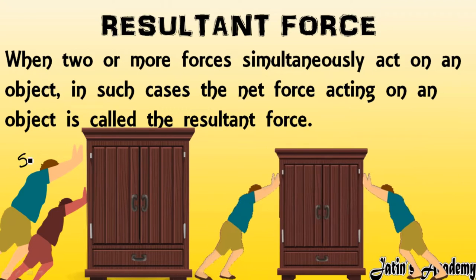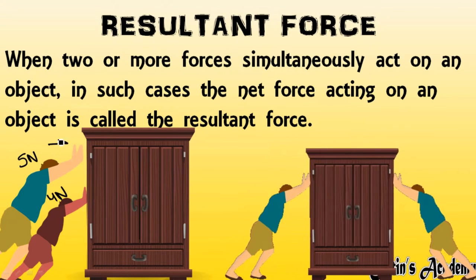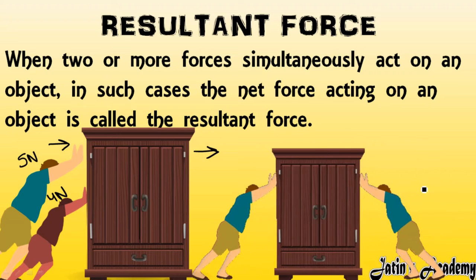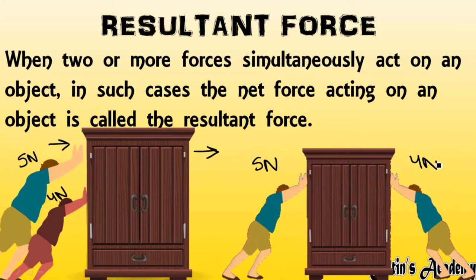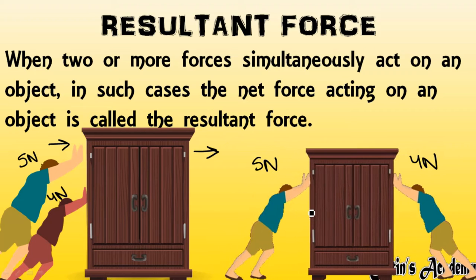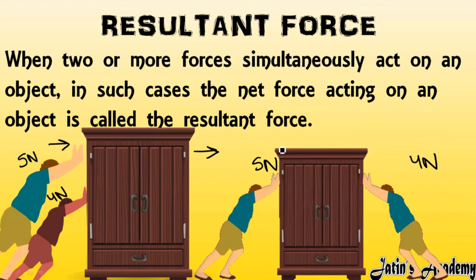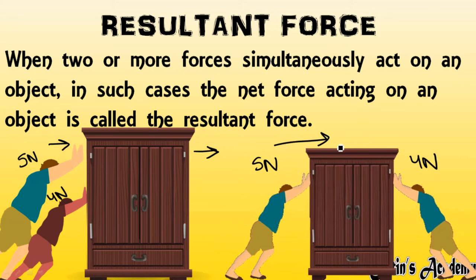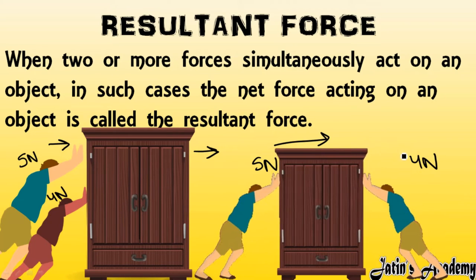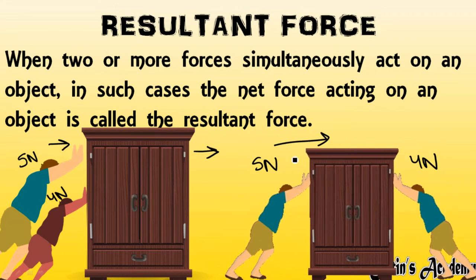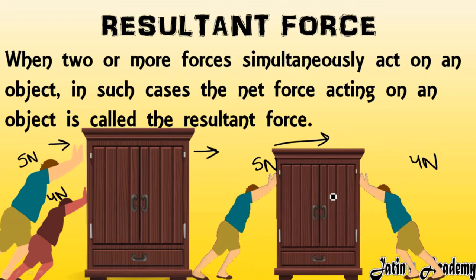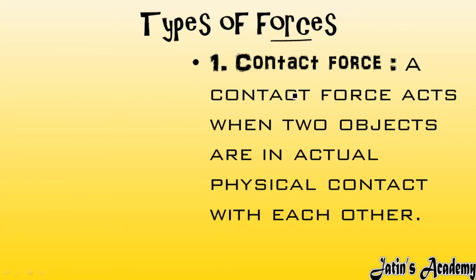For example, if one person applies 5 newtons in one direction and another applies 4 newtons from the opposite direction, the almirah will move toward the side where 5 newtons is applied, because that is the greater force. The object always moves in the direction of the greater resultant force.